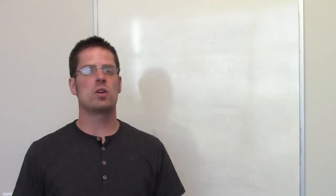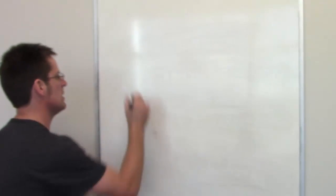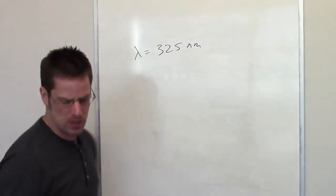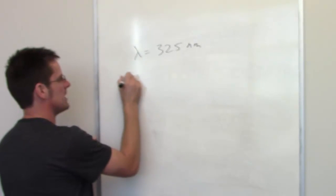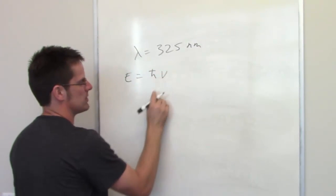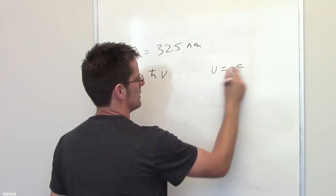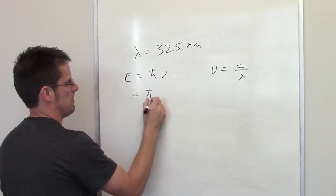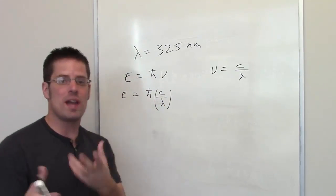In this second problem, we're told that one type of sunburn occurs through exposure to UV light of a wavelength of 325 nanometers. In Part A, it asks: what is the energy of a photon of this wavelength? Energy is equal to Planck's constant multiplied by frequency, and frequency equals the speed of light divided by wavelength, so we substitute that in.